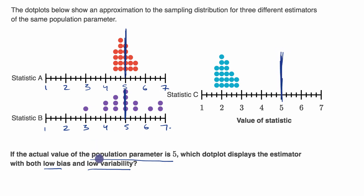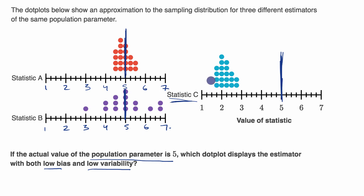Which of these statistics seems to be biased? The one that looks clearly biased is statistic C. When you look at its sampling distribution, it is consistently to the left of our true parameter, so it is consistently underestimating our parameter. This one right over here is biased.